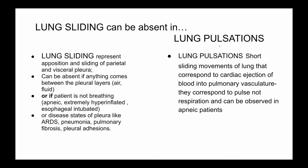Lung sliding represents the apposition of parietal and visceral pleura. Lung sliding can be absent if anything comes between the visceral and parietal pleura — like air or fluid — but it can also be absent or minimized when the patient is not breathing, such as if someone is apneic, extremely hyperinflated, esophageally intubated, or in disease states like ARDS, interstitial fibrosis, or pleural adhesions that injure the pleural surface and prevent smooth sliding.